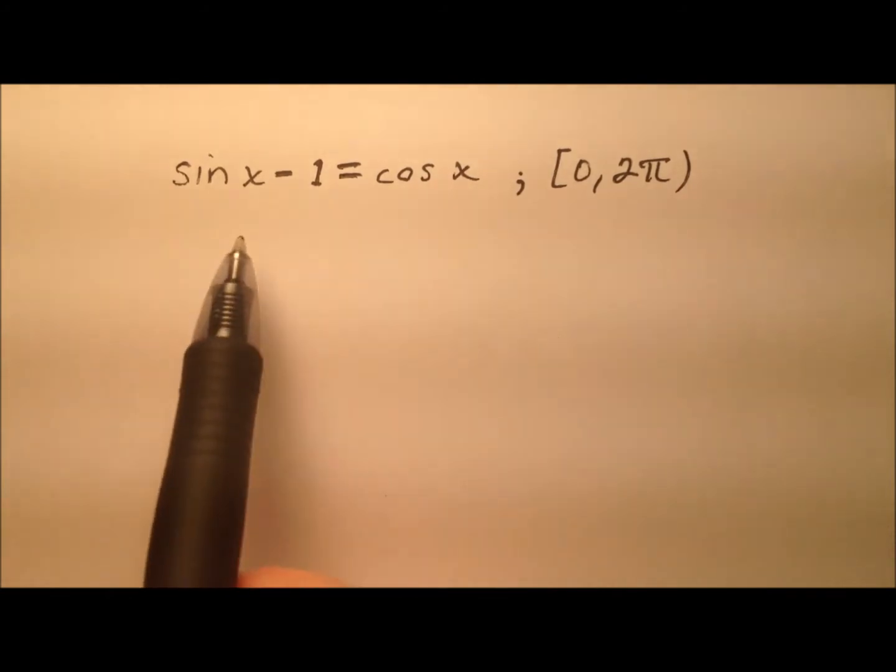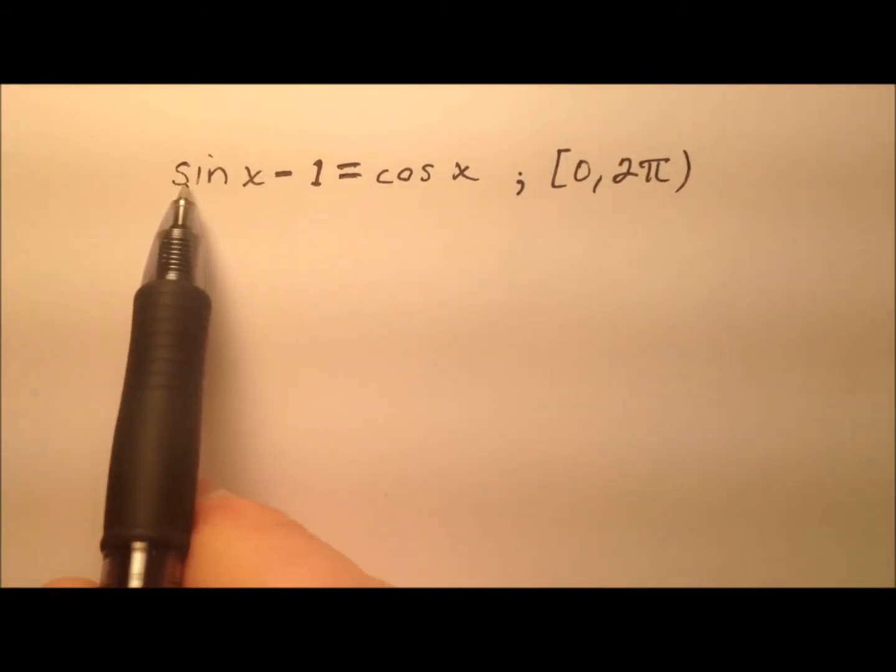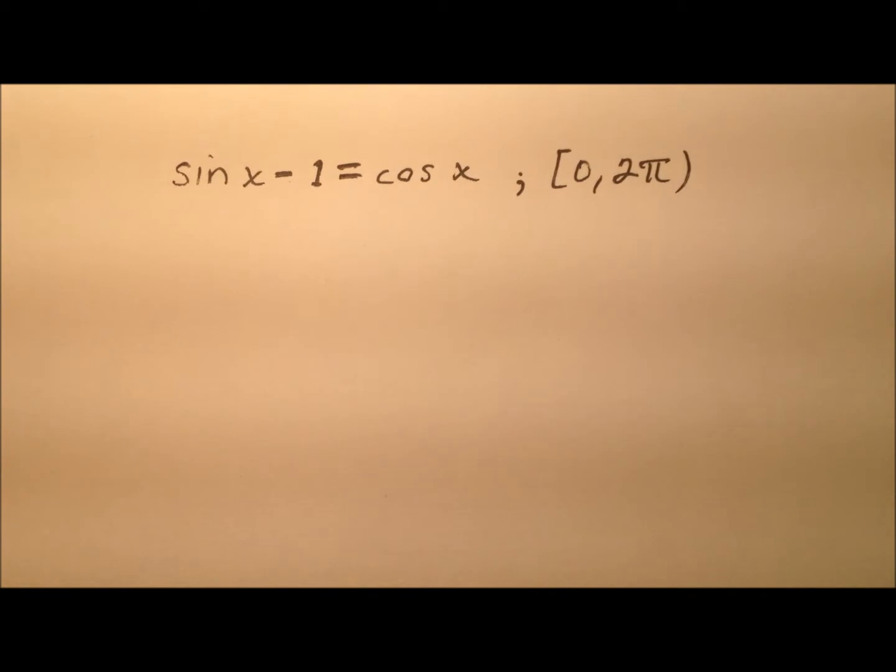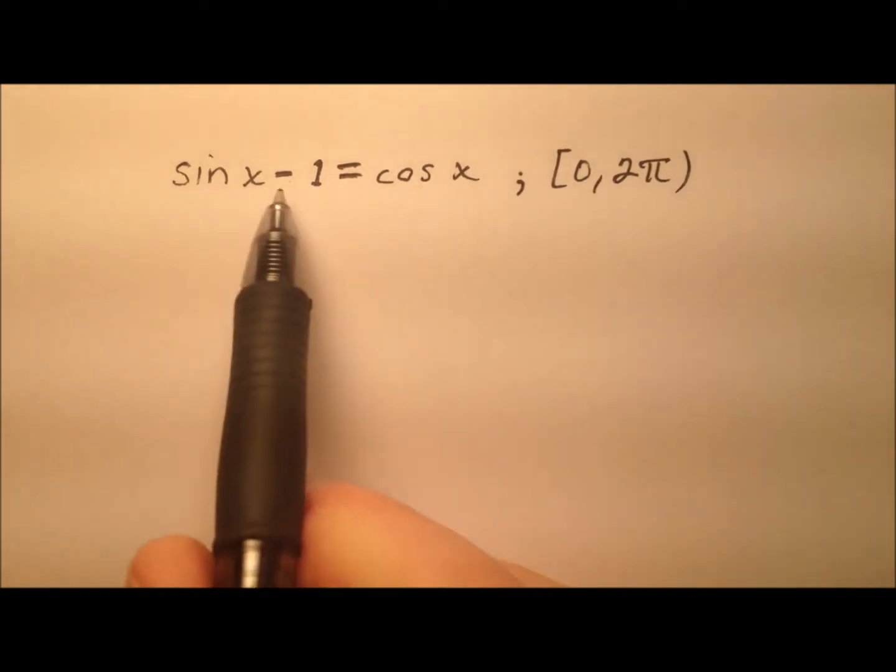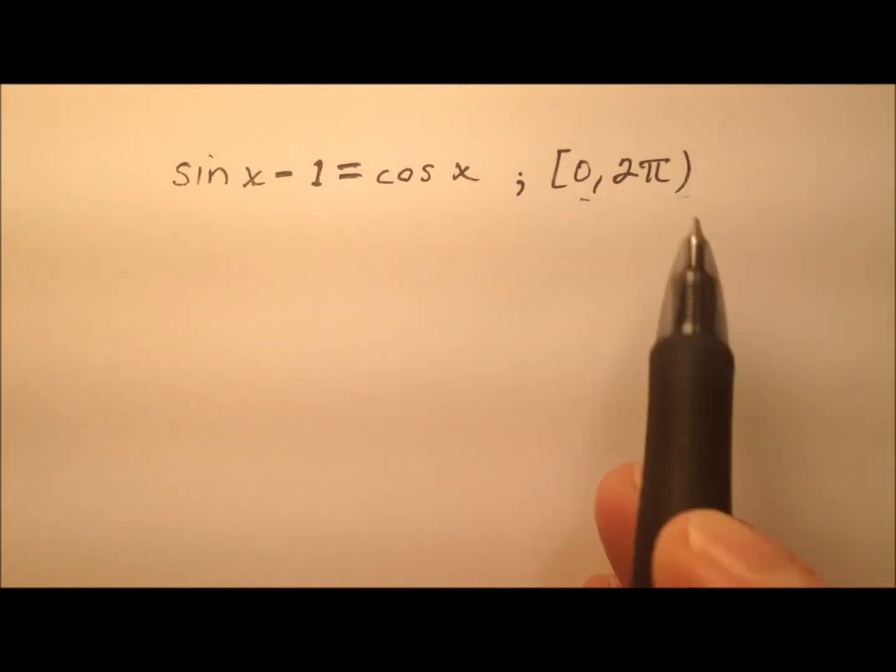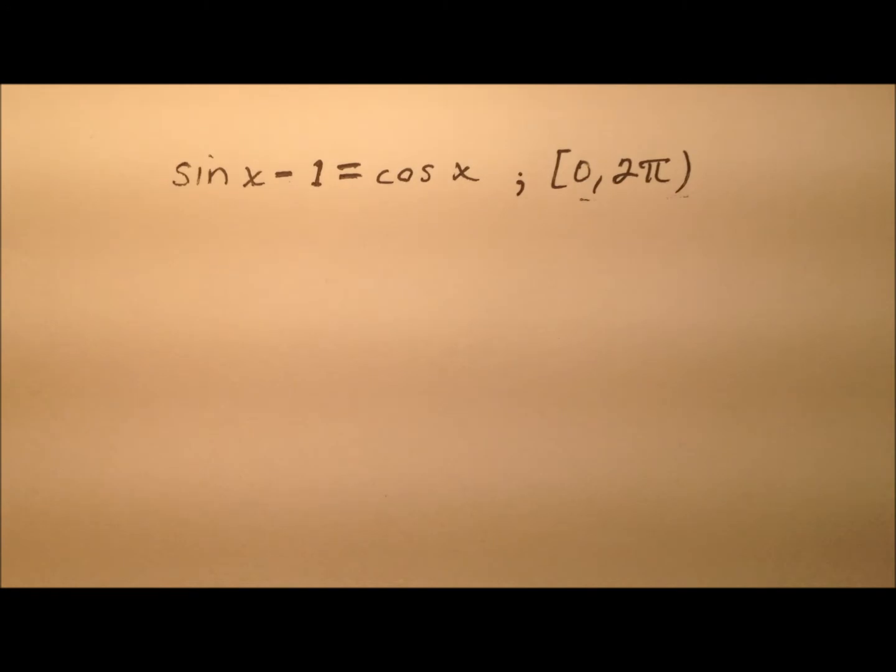In this example, we're going to solve this trigonometric equation: the sine of x minus 1 equals the cosine of x. And we're going to be finding these values of x in the interval 0 to 2π, so that means we will need our answers in radians. So if you'd like to try this on your own, go ahead and pause the video and do so, and then come on back and we'll work it together.